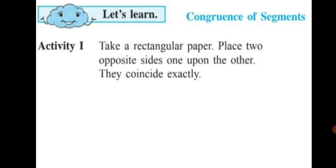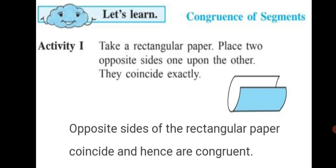Activity: take a rectangular paper, place two opposite sides one upon the other. They coincide exactly. When you fold the paper for craftwork, you have seen that the two opposite edges of a rectangular paper fall one above the other exactly. That means they coincide. So, opposite sides of the rectangular paper coincide and hence are congruent.